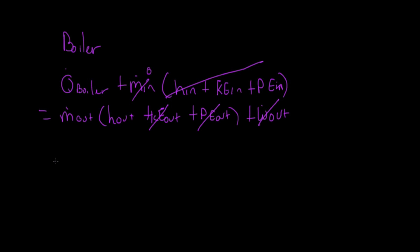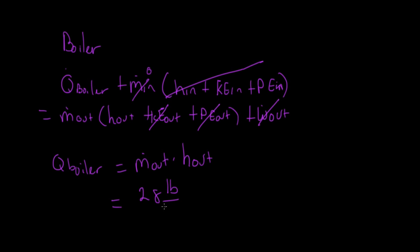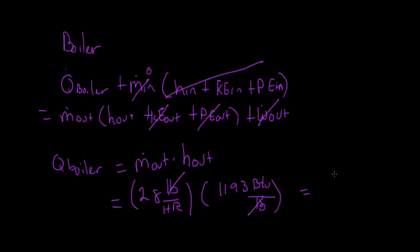This leaves us with Q_boiler equals mass flow rate out times H_out. From lab session three we have these two values, so let's plug those in: 28 pounds per hour times 1193 BTU per pound. The units cancel and we're left with Q_boiler equal to 33,404 BTU per hour.